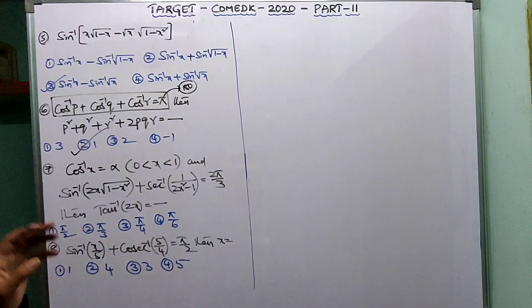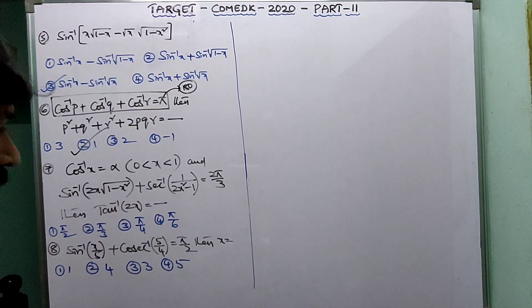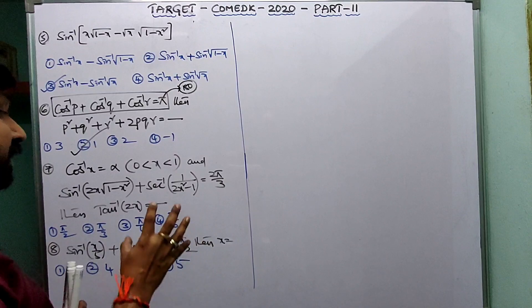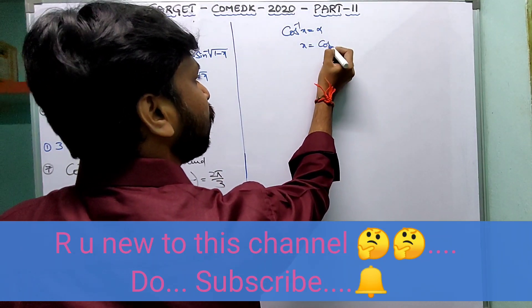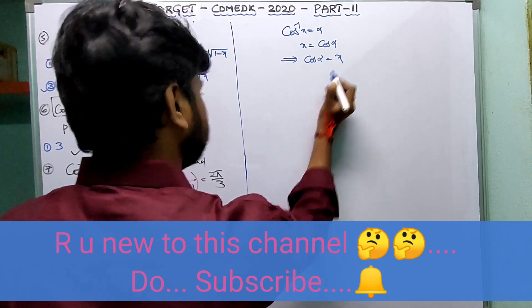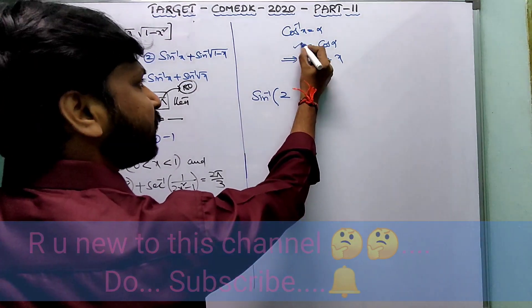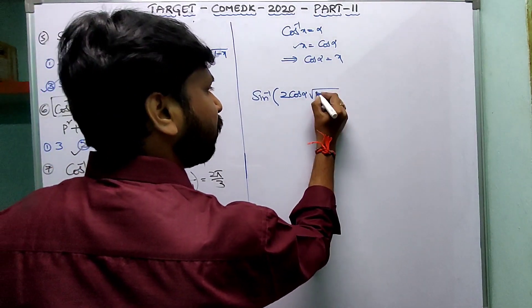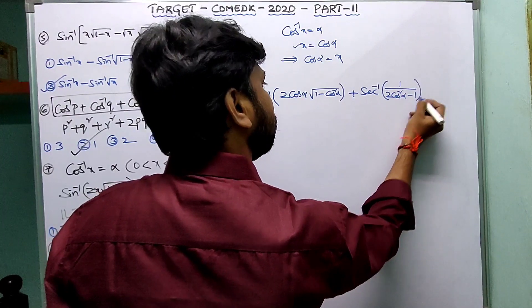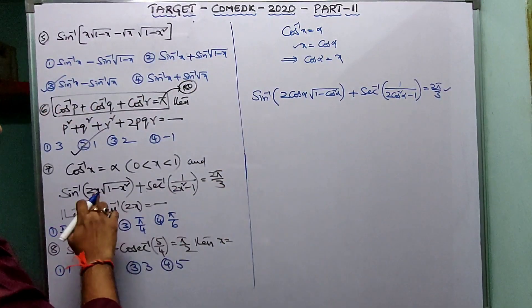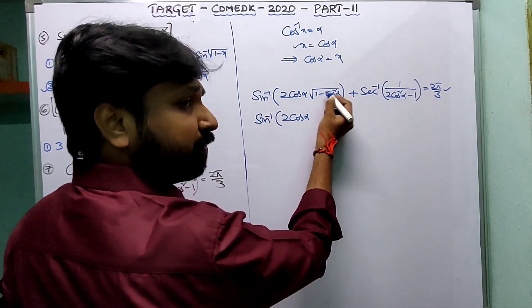Question: Given cos⁻¹x = α, with 0 < x < 1, and the condition sin⁻¹(2x·√(1-x²)) + sec⁻¹(1/(2x²-1)) = 2π/3. Let x = cosα. Substitute: 2x·√(1-x²) = 2cosα·sinα = sin(2α). So the expression becomes sin⁻¹(sin2α) + sec⁻¹(sec2α).